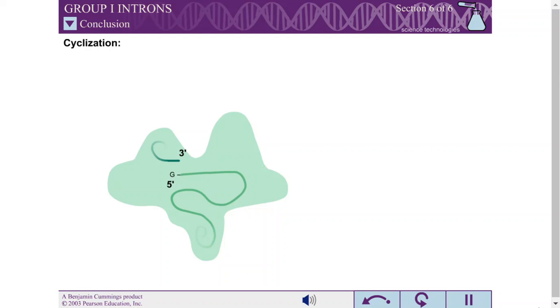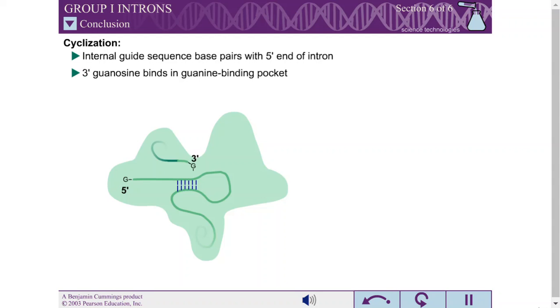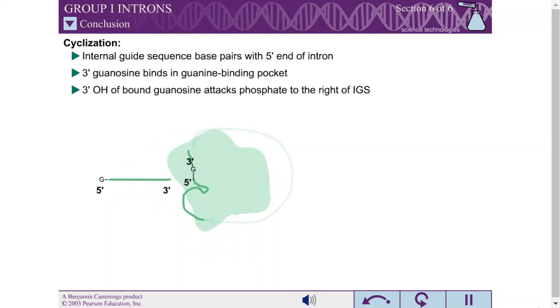The intron then undergoes cyclization. This reaction destroys the tertiary structure of the intron, preventing it from catalyzing the back reaction to reinsert itself into the RNA transcript.